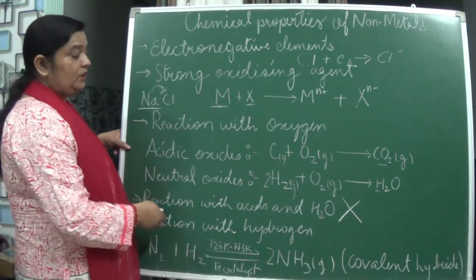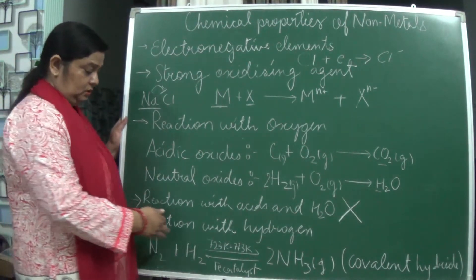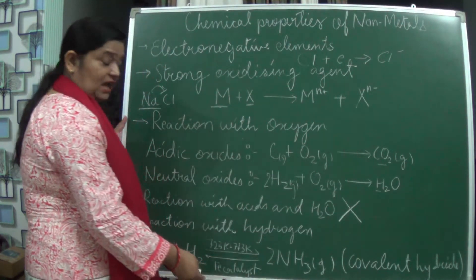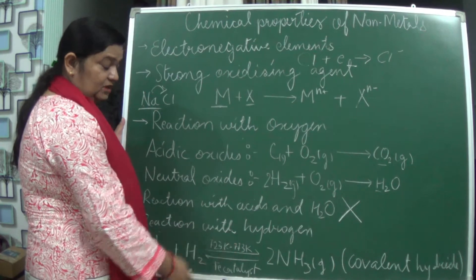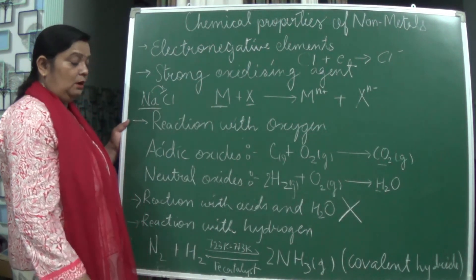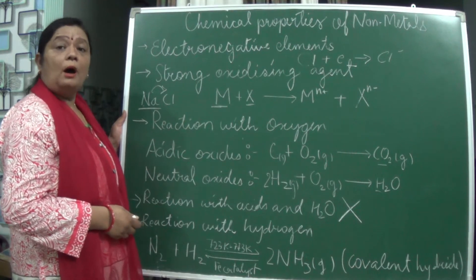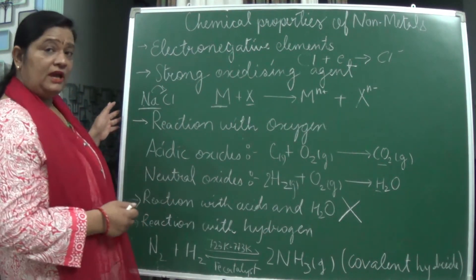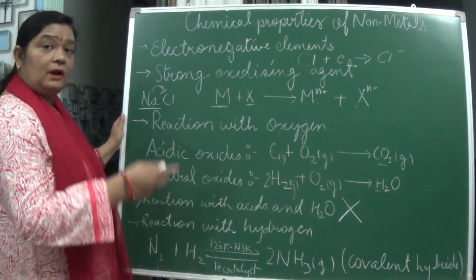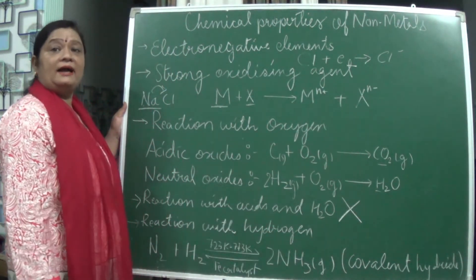When we talk about the reaction with hydrogen, non-metals do react with hydrogen to form hydrides. Like nitrogen reacts with hydrogen, with a specific iron catalyst and temperature of 773 Kelvin, to form ammonia. This ammonia is a covalent hydride — they are formed by sharing electrons, forming the corresponding hydrides.